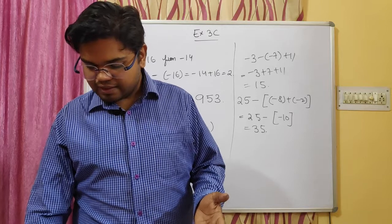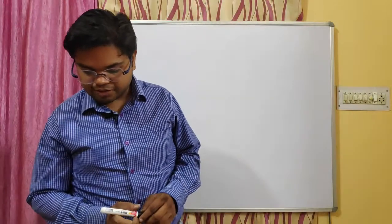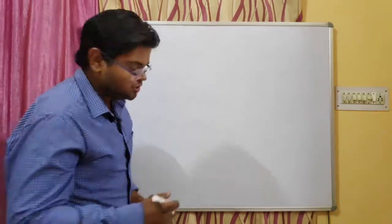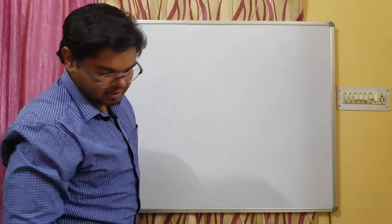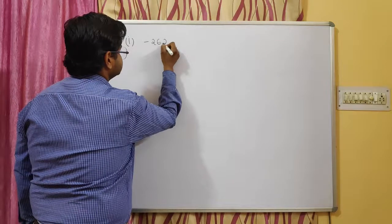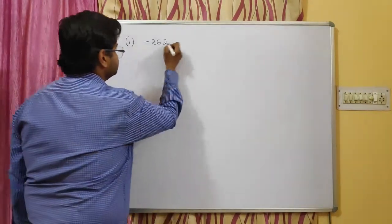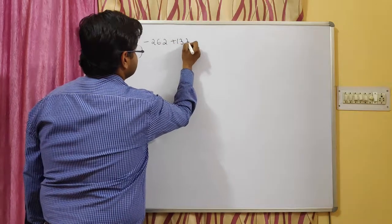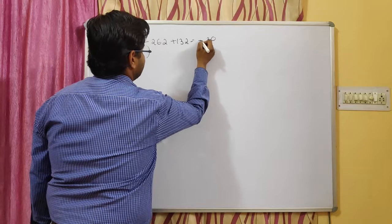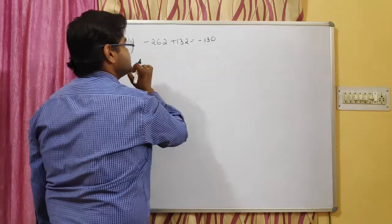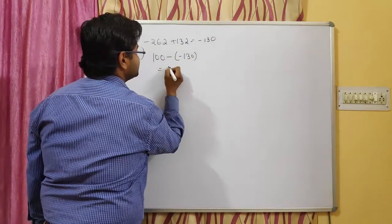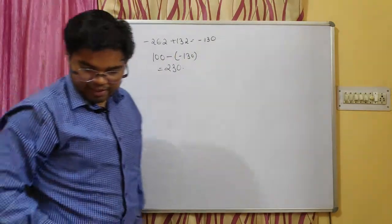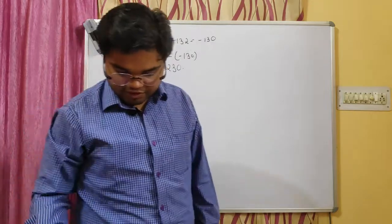Question number 7 is very important. The question says: subtract the sum of minus 262 and 132 from 100. If you add minus 262 and 132, the answer is minus 130. Then you subtract this from 100: 100 minus of minus 130. The minus minus becomes plus, so 100 plus 130 equals 230. You can also look at example number 16 for this type of question.